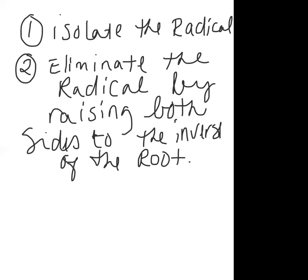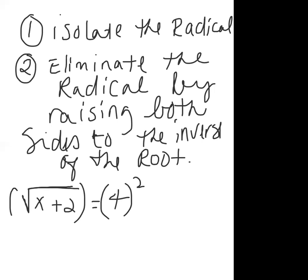For example, take the square root of x plus 2 equals 4. Since we have a square root, we eliminate it by squaring both sides. When you square both sides, the power cancels out the root, leaving what's inside the root on the left. On the right side, you square the 4 to get 16.